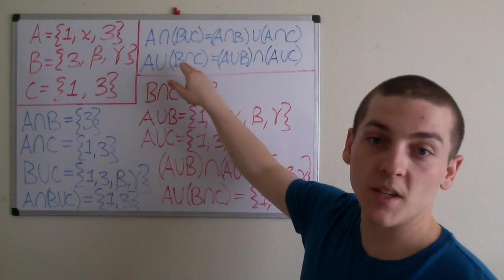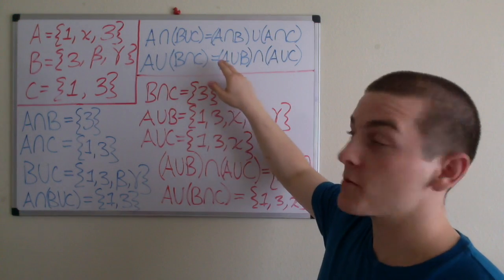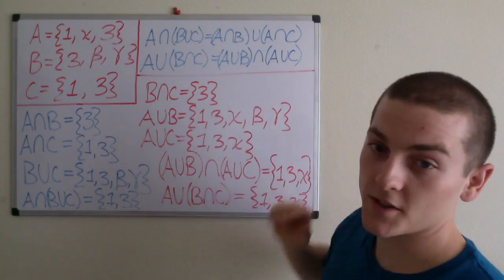Now if we look at A union B intersection C, that's supposed to equal A union B intersection A union C.